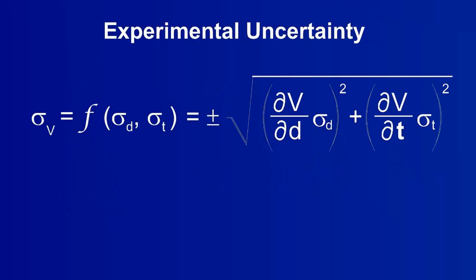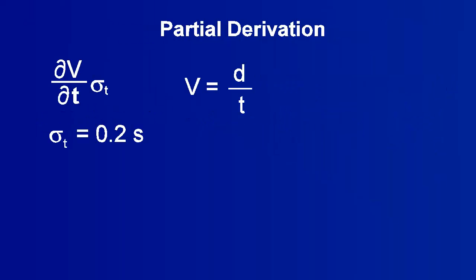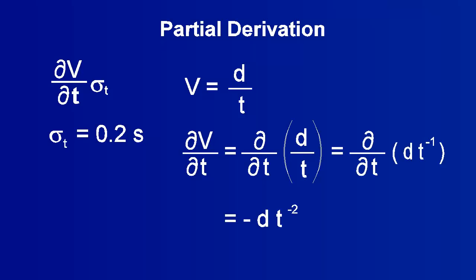The partial derivative with respect to the time, t, is also needed. Because the time is in the denominator, its partial derivative is a bit more complex.